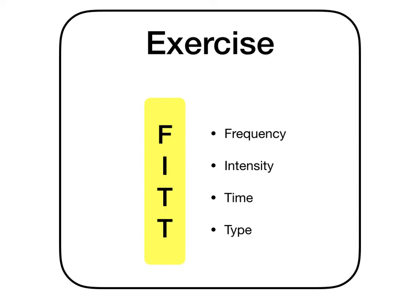Frequency refers to how often we do the activity — is it daily, twice a week, or once a month? Intensity is how hard the exercise is, or what level of exertion we put into it. Time is for how long you do it — 10 minutes or 2 hours. And type is what kind of exercise it is — whether it involves static movements or free-flow running or playing as part of a game.